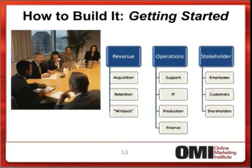What I like to do is break it into a very simple grid. Every company is slightly different and your grid may not look exactly like this, but when you think about it there are probably three main buckets: there's a revenue bucket, there's an operations bucket, and there's a stakeholder bucket.